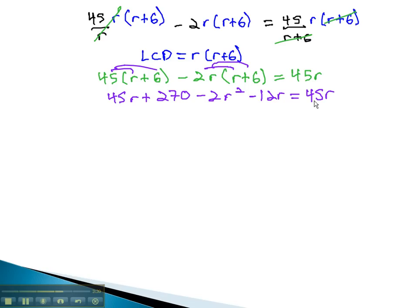You may notice that we have 45r on both sides of the equation again. This is nice, because we can simply subtract 45r from both sides for them to subtract out.